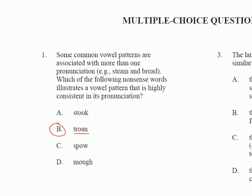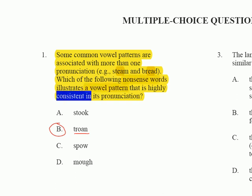What they do is set up conditions, and you have to find the answer that best matches those conditions. Question number one reads: 'Some common vowel patterns are associated with one or more pronunciations, like steam and bread — notice the EA pattern.' Steam uses a long vowel and bread uses a short vowel. What they want to know is which nonsense word illustrates a vowel pattern that is consistent — in other words, doesn't have both a long and short pronunciation.